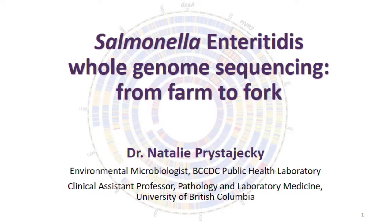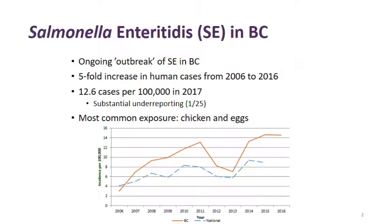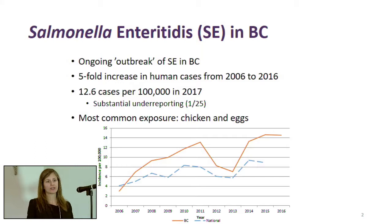Today I'm going to talk about a project we're embarking on — whole genome sequencing of Salmonella enteritidis — with many partners in this room. Salmonella enteritidis, or SE, causes diarrhea and is a specific serovar or strain of salmonella. It is a zoonosis, and it is the most prevalent serovar of salmonella in British Columbia.